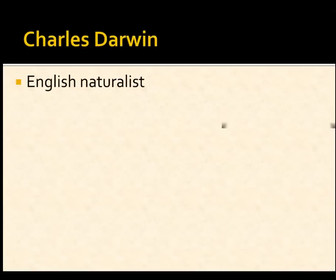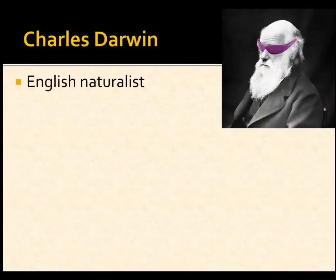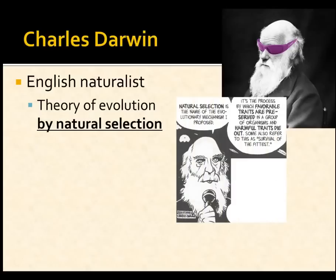Charles Darwin was an English naturalist. He came up with not the theory of evolution — that's a common misconception — but the mechanism. How do species evolve? How do creatures change over time? His idea was natural selection. The idea of evolution actually predated him.